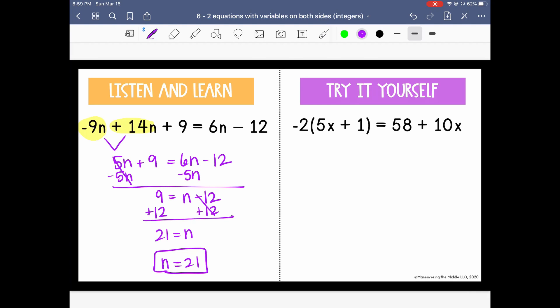For this equation, we need to start by distributing the negative 2 to each term inside of these parentheses. So when we multiply, we get negative 10x minus 2 equals 58 plus 10x.